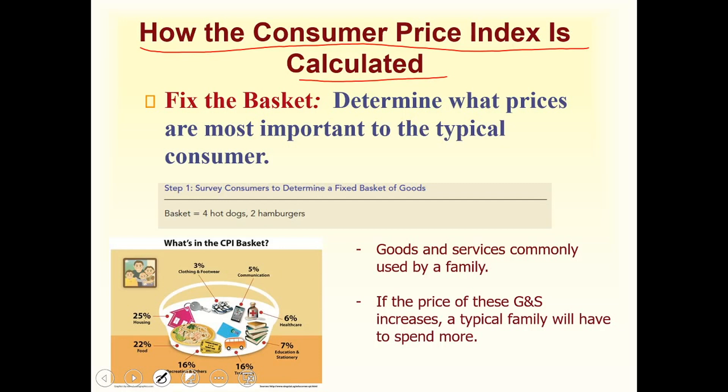Now we will discuss how CPI is calculated. There are several steps, so we will discuss them one by one. The first step is to fix the basket — determine what prices are most important to the typical consumer. So we need to understand what a typical consumer is.